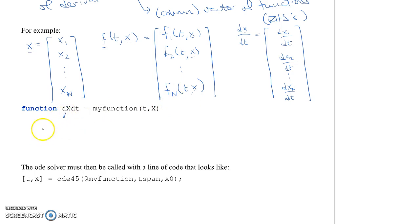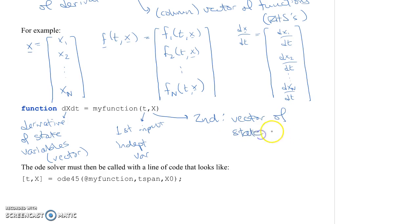Just to write that down, your DXDT should be your derivative of state variables, and that should be a vector. So the output is a vector, and this is a function name. Then your first input to my function is your independent variable. And your second input is a vector of dependent variables, or state variables.